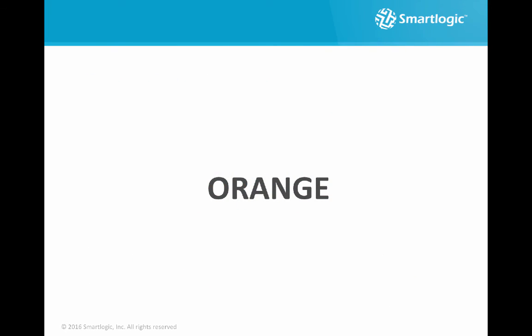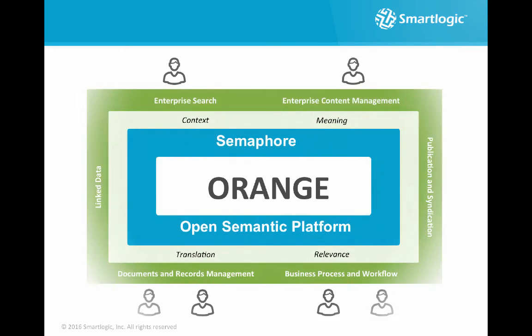Back to our simple word, Orange. Semantics can be complex. The solution you need must be flexible enough to deal with the structures and language specific to your organisation, and the outputs must be of the highest quality. Poor classification or misleading topic suggestions don't help the user go from search to find, and from find to discover. Semaphore has this depth of capability, and that's why you need the open semantic platform from SmartLogic.